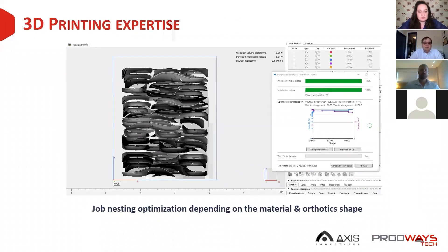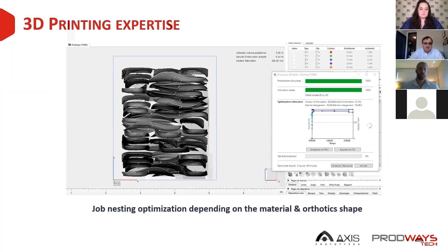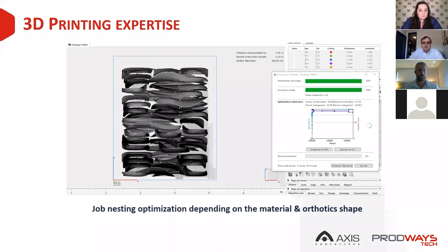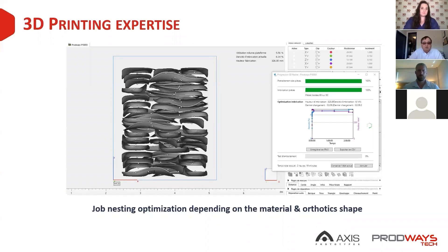A typical full build fits about 30 pairs of orthotics, though nesting depends on size — more children's orthotics versus large adult sizes can change the packing amount. Parts are nested in software like Magics, with spacing between parts to manage the heating dynamics of the machine. The build envelope on the Prodways machines is 300 by 300 by 360 millimeters. Once launched, the machine builds for approximately 16 to 18 hours and can run unattended. There are also many options now available for automated post-processing, including depowdering and blasting within the same unit.